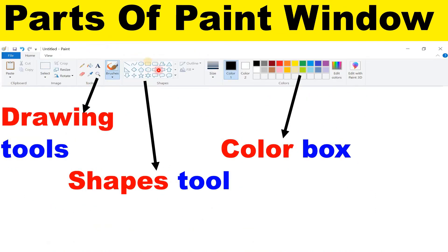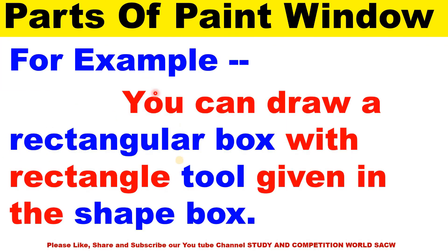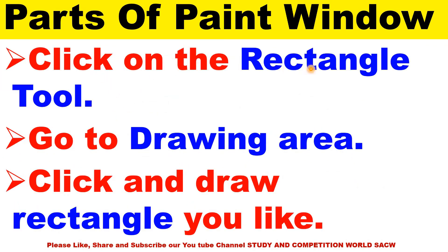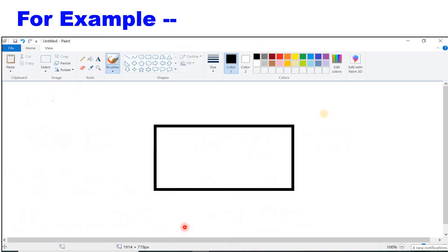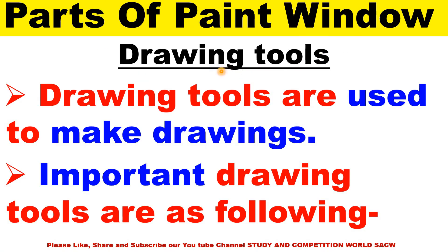Here is the rectangle — you can easily pick this rectangle and draw. Click on the rectangle tool as the first step, go to the drawing area, then click and draw the rectangle you like. Drawing tools are used to make drawings.